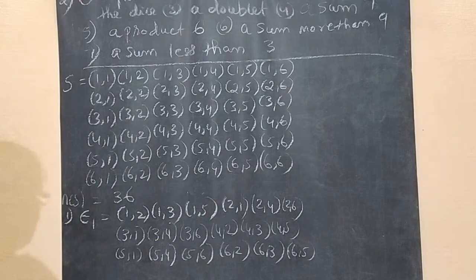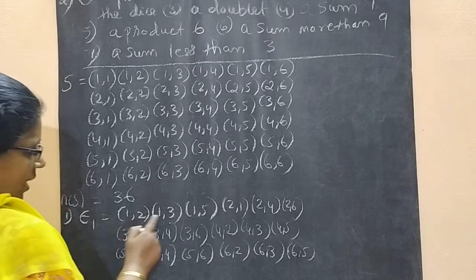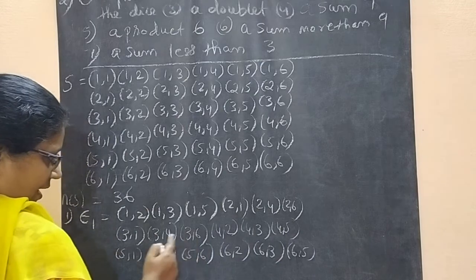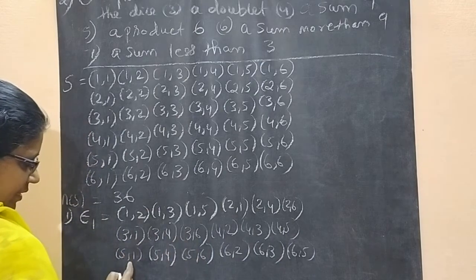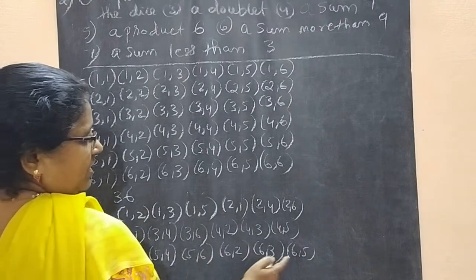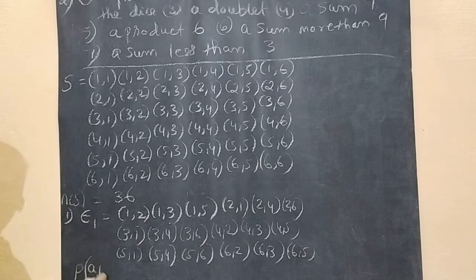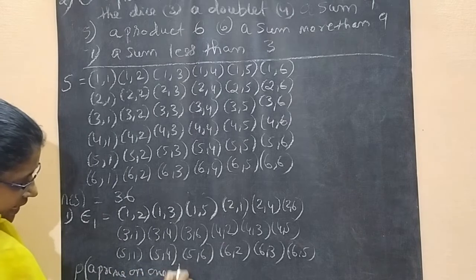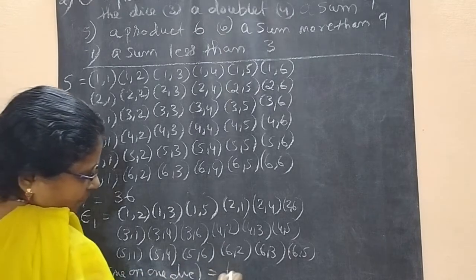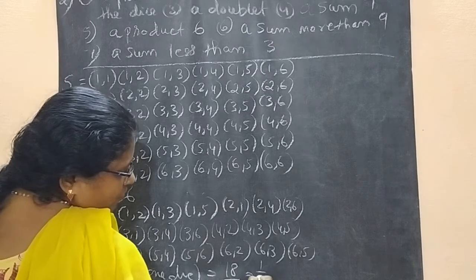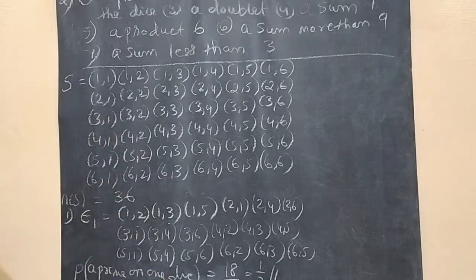So how many are we getting? Counting: 1, 2, 3, 4, 5, 6, 7, 8, 9, 10, 11, 12, 13, 14, 15, 16, 17, 18. So the probability of getting a prime number on one die is equal to 18 by 36, which equals 1 by 2.